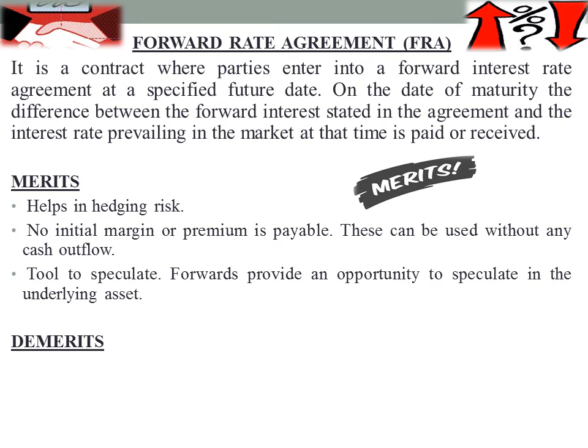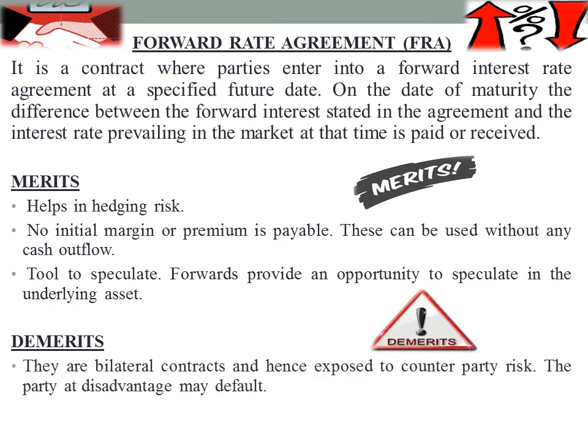Now the demerits of forward contracts. First, they are bilateral contracts and hence exposed to counterparty risk — the party at a disadvantage may default. Since there is no control by stock exchanges or other authorities, this becomes a personal risk. The seller may fail to deliver the asset, or the buyer may fail to make payment on the future date, creating counterparty risk.